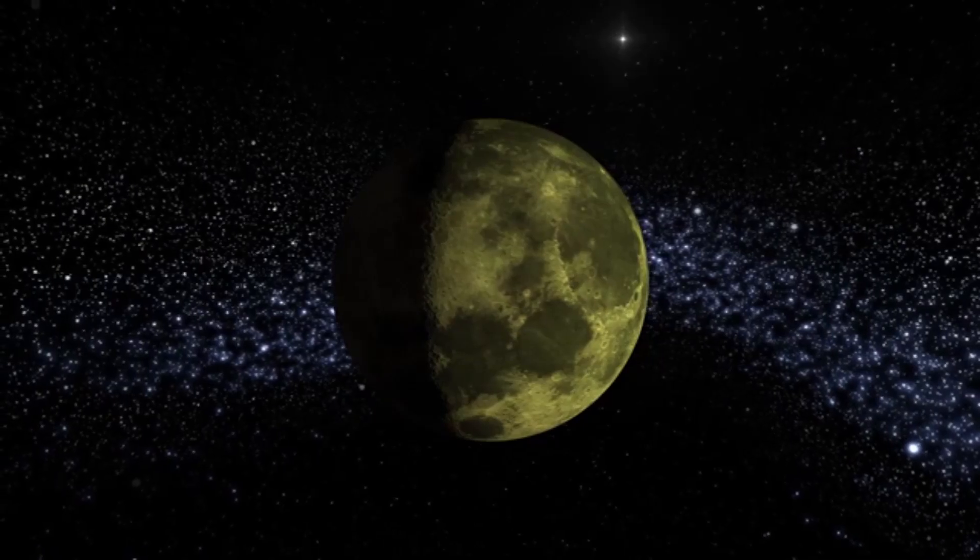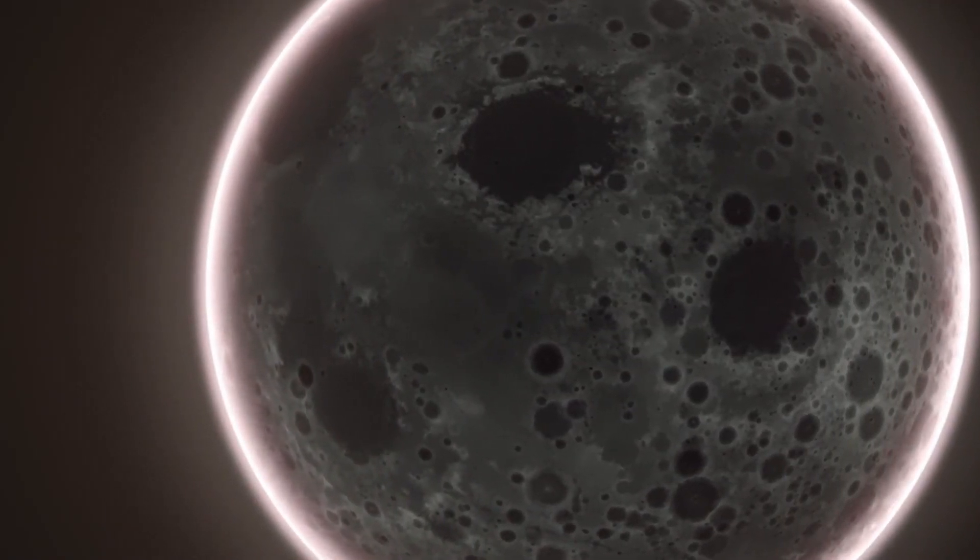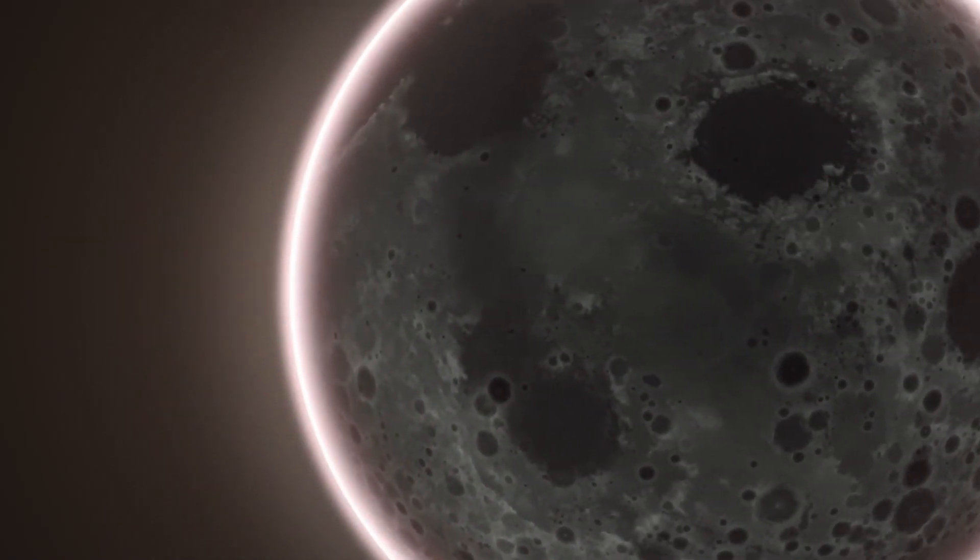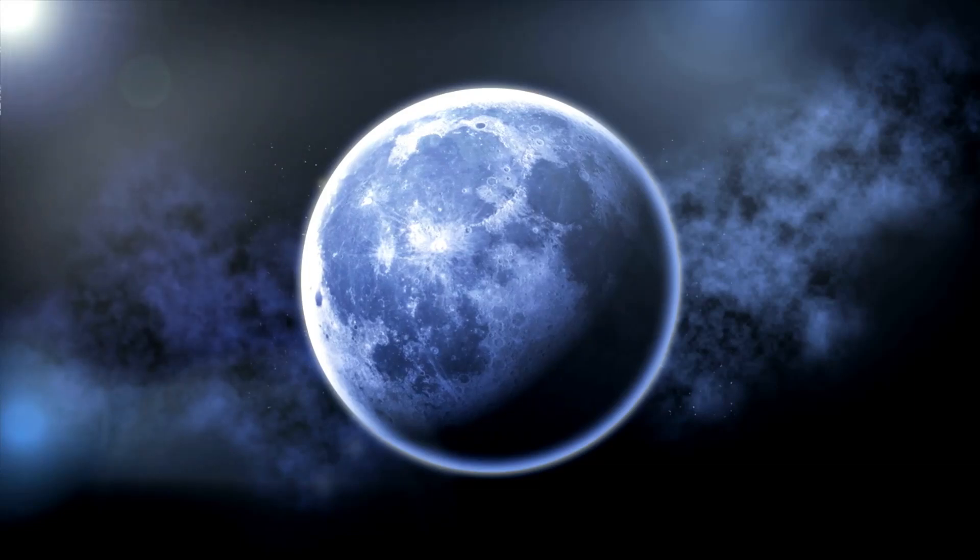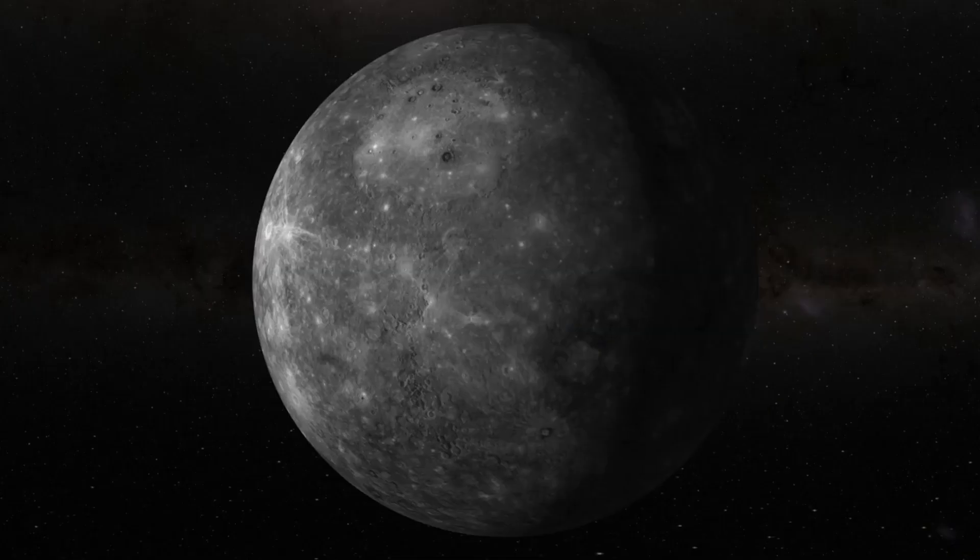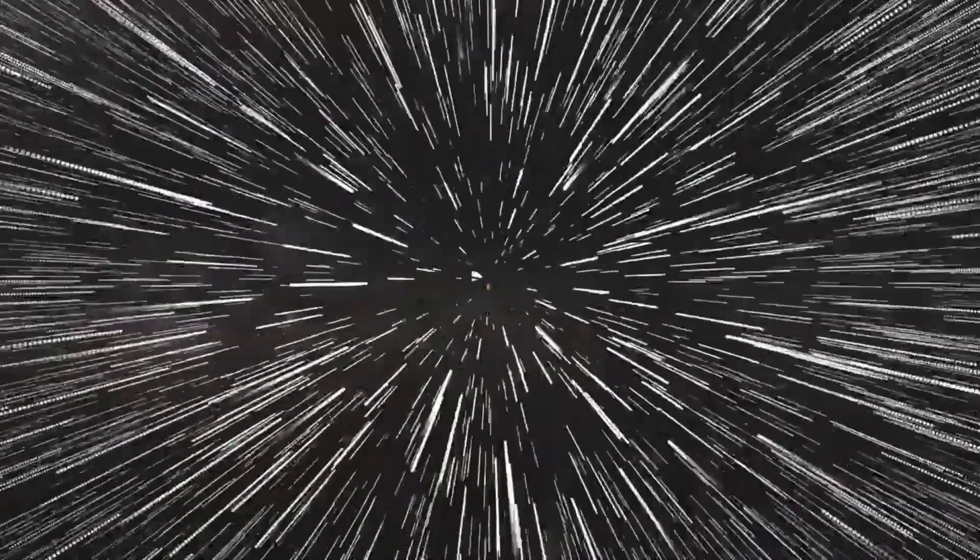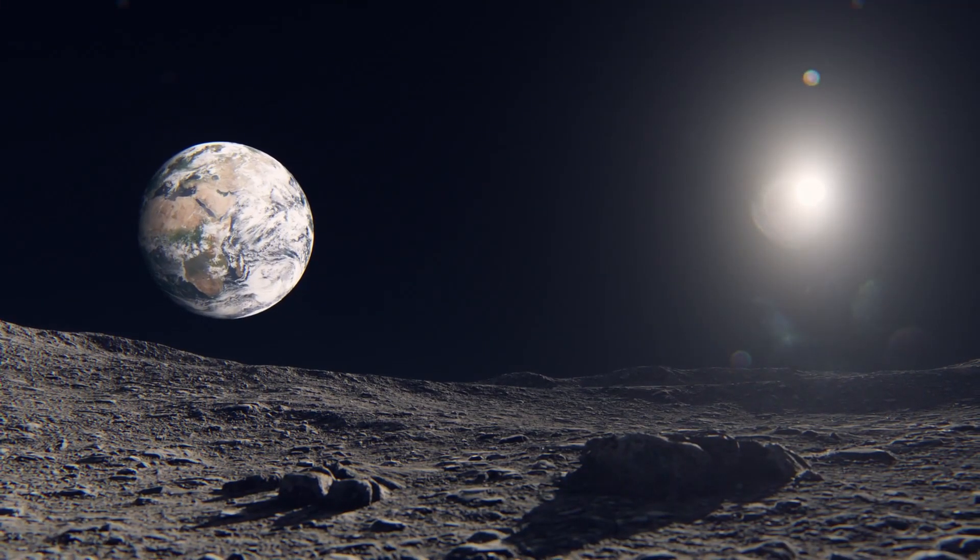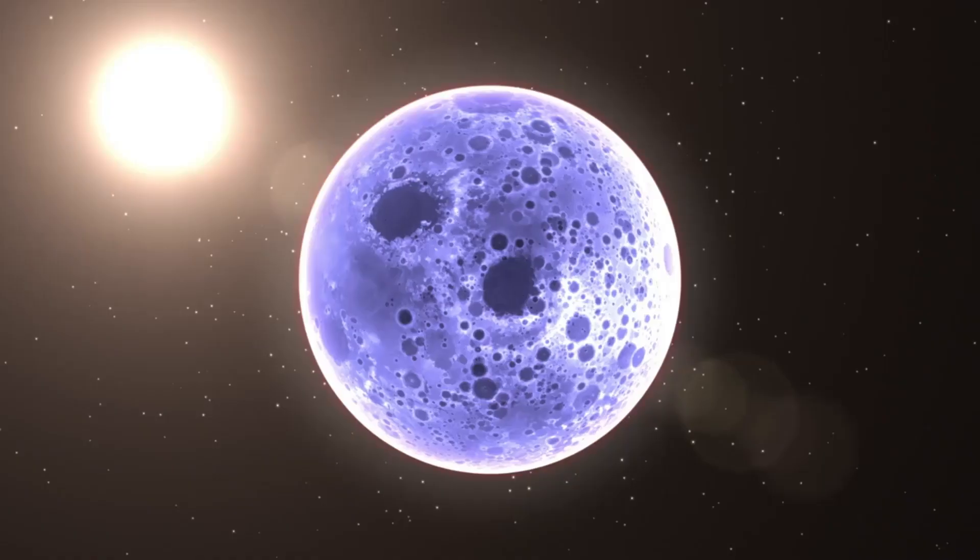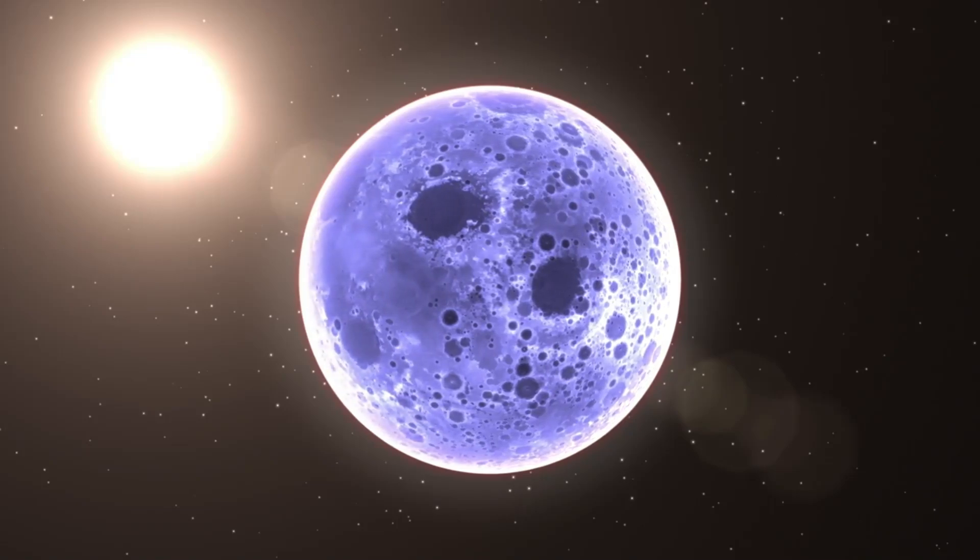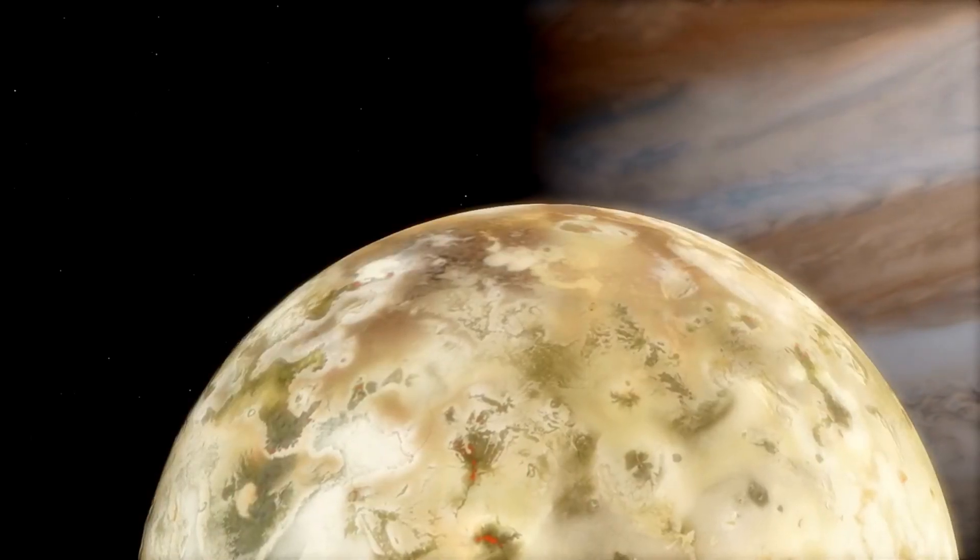On closer examination, Proxima b turns out to be very similar to Earth, with a radius 1.1 times that of Earth and a mass 1.3 times that of Earth, indicating that it is a rocky world with an equivalent density. However, there are significant differences. The first is the location of the two planets in their respective solar systems. Proxima b is much closer to its parent star at only 0.05 astronomical units, while Mercury is at a distance of 0.39 astronomical units from the Sun. This proximity would make Proxima b an extremely hot planet, but because Proxima Centauri is a dim red dwarf, the planet receives only 60% of the energy that Earth receives from the Sun, placing it in the habitable zone where life could exist.